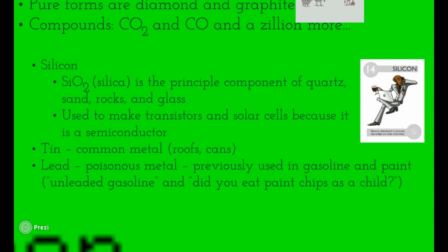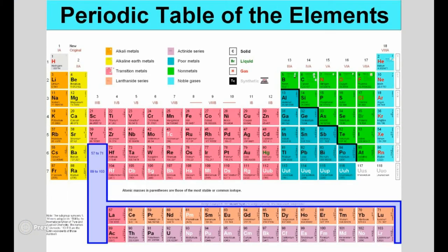Carbon is into everything — there's a whole chemistry based on it called organic chemistry. Silicon is also used to make glass. If you want to know where to find all the silicon, sand on the beach is the best source — you can actually take sand and make it into glass. Tin acts more as a transition metal. Lead is a very poisonous metal, previously used in gasoline and paint.